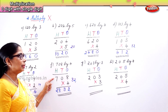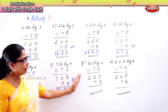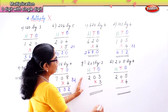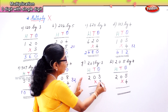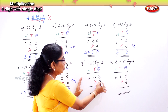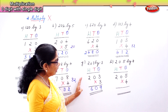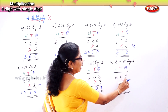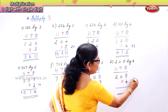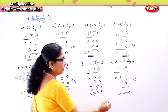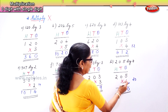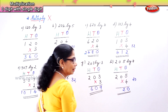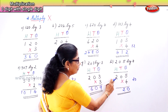Now two hundred and three multiplied by three — in the ones place you have three. Three threes are nine. Zero into three is zero. Three twos are six. And finally, two hundred and five multiplied by four. Five fours are twenty — put the zero in the ones place. In the tens place you have zero, so you bring the two here. Then in the hundreds place, two fours are eight.